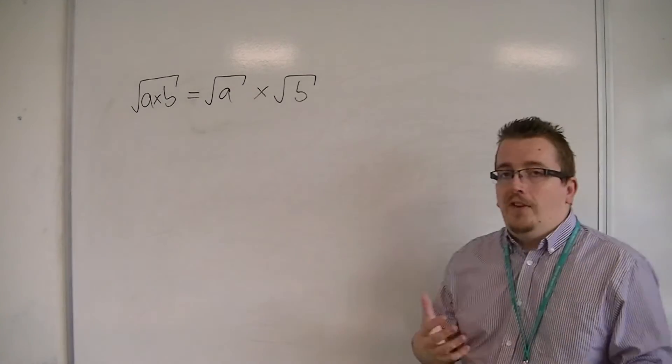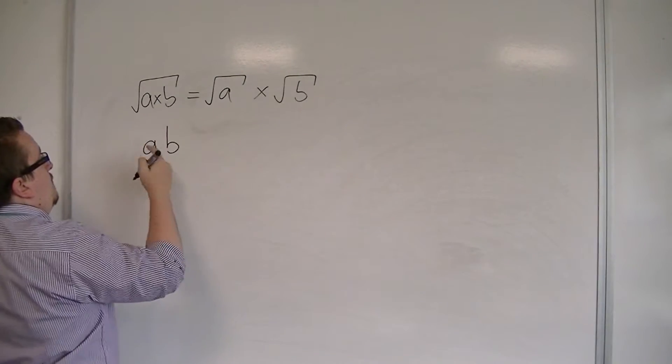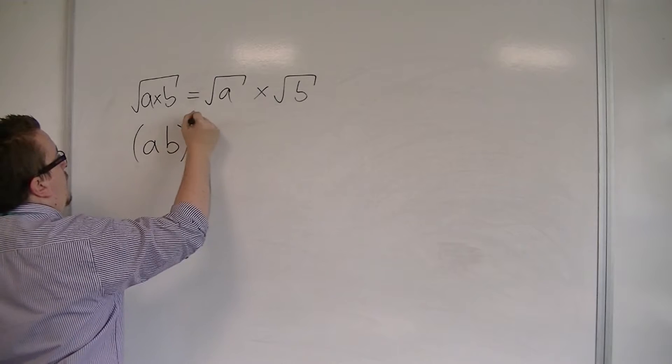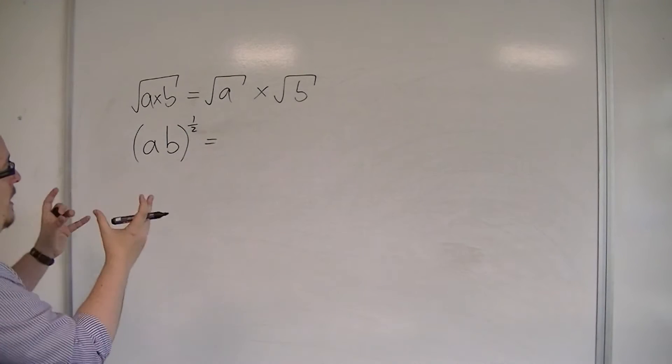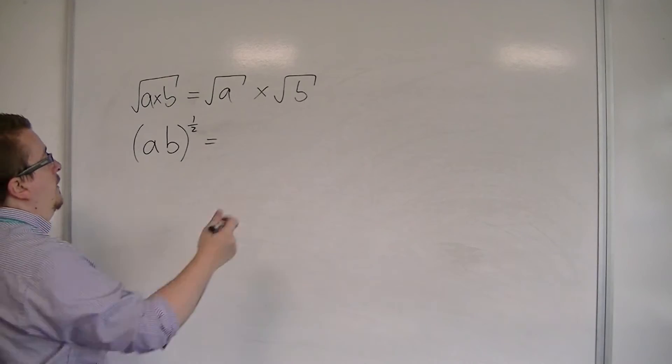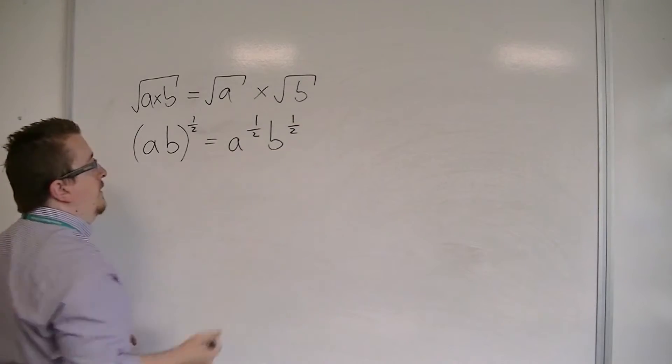So the concept is that I could write ab to the power of a half, you might be able to see a little bit better with indices notation, is equal to a to the half b to the half.